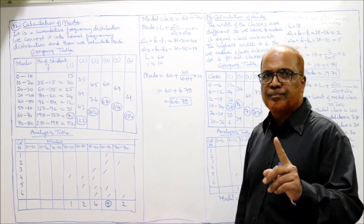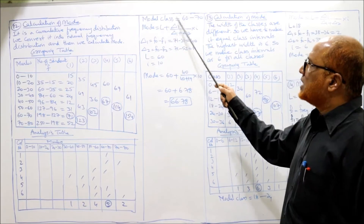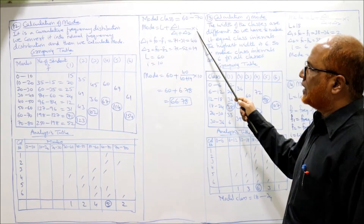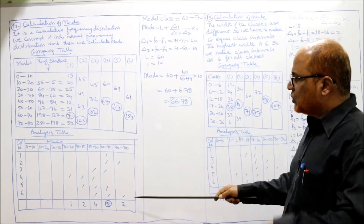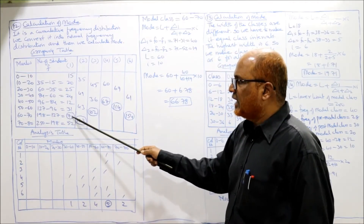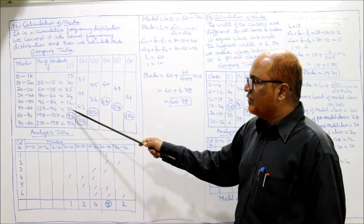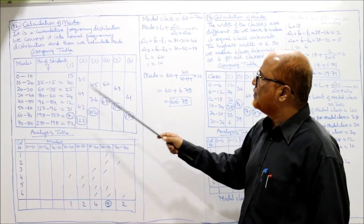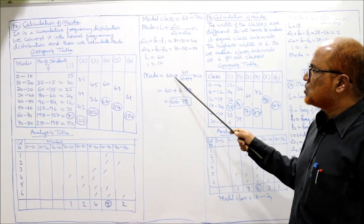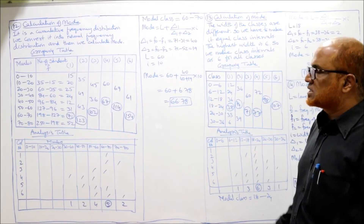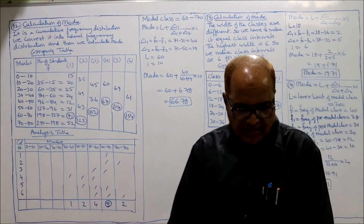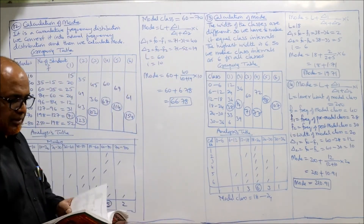Modal class is 60 to 70. f₀=71, f₁=31, f₂=52. Delta 1 = 71−31=40, delta 2 = 71−52=19. l=60, i=10. Mode = 60 + (40 ÷ (40+19)) × 10 = 66.78. That is the mode for problem 12. Now see problem number 13.